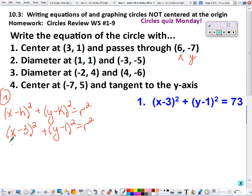For number one, we're gonna plug in the center and then we get a point (x, y). So we're gonna plug those values in. This is 6, this one's -7, so we get 3 squared plus -8 squared is r squared.